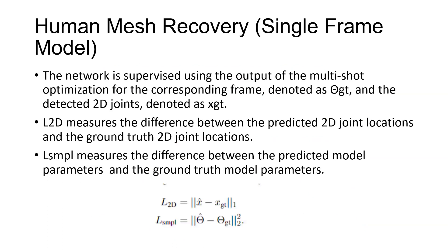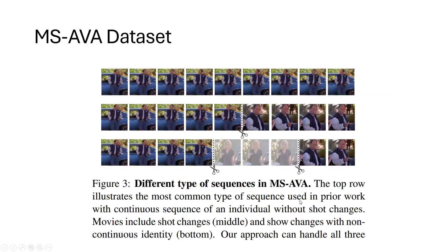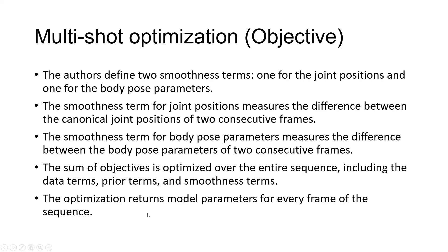Along with the dataset, they also provide a model. They define a single frame model first. They took the basic existing HMR model and changed the loss of that model. For the loss, the model predicts 2D joint positions and body shape parameters. For the ground truth, they used the optimized 2D joint positions and 3D body shape parameters from the multi-shot optimization algorithm, which returns the optimized parameters for each frame.